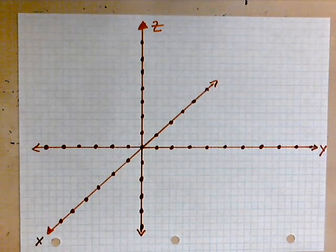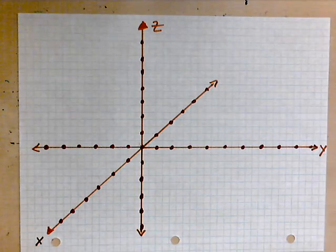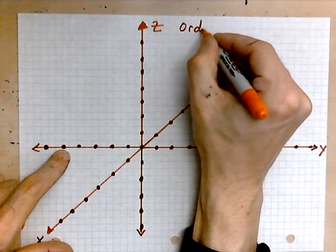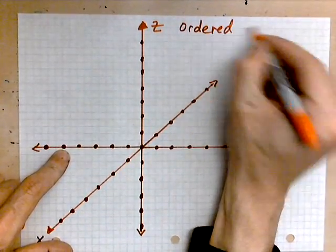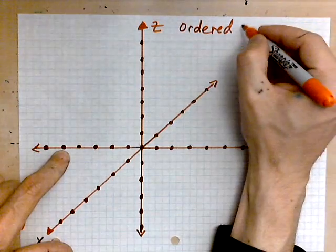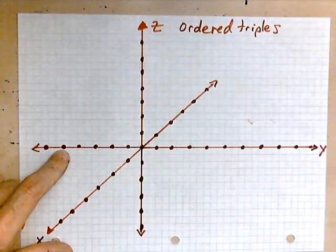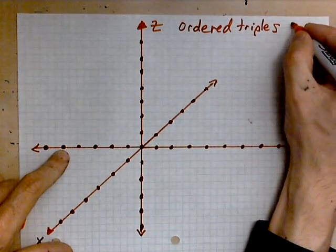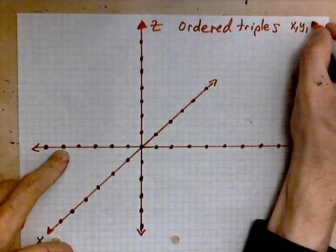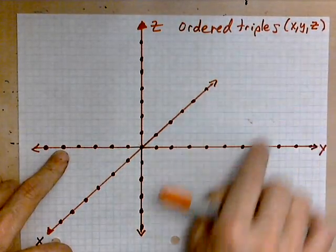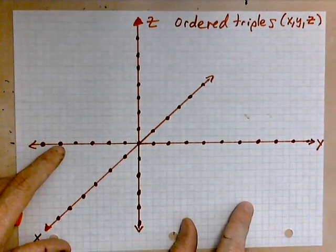Once you have this, the next step is to plot a point. These points are what we call ordered triples. So an ordered triple has three values: an x, a y, and a z. This is a three-dimensional point consisting of x, y, and z.